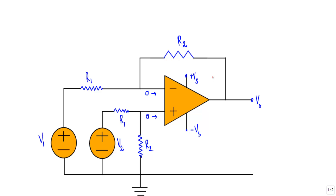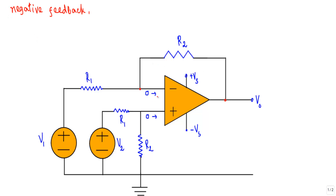This is the circuit structure of the operational amplifier difference amplifier. The op amp is supplied with two voltage sources, plus Vs and minus Vs. Voltage V1 is applied at the inverting terminal through series resistor R1, and V1 and V2 are our input voltages. The output terminal is connected to the inverting terminal through resistor R2. Because the output is connected to the inverting terminal through a passive element, this op amp will be in negative feedback.